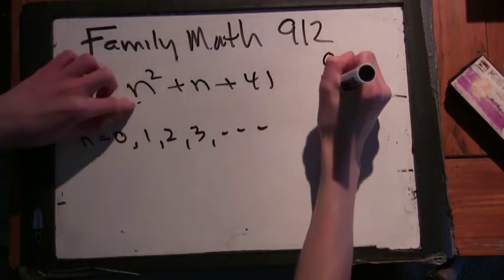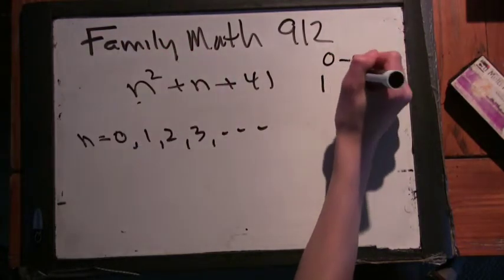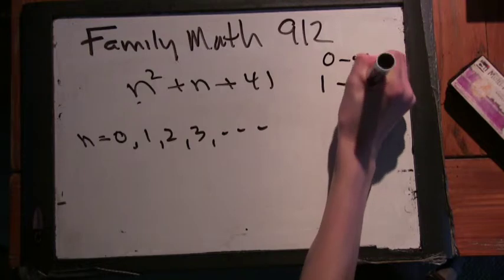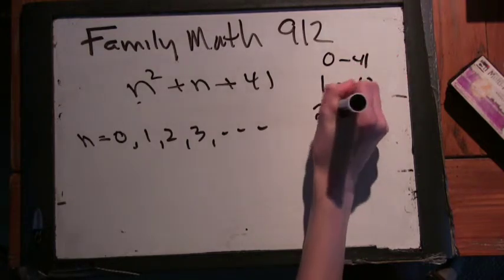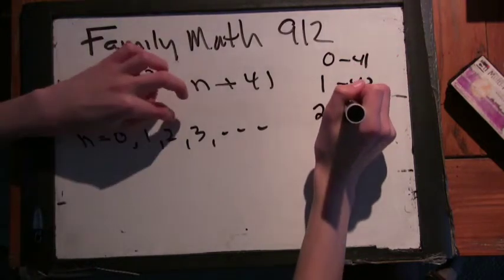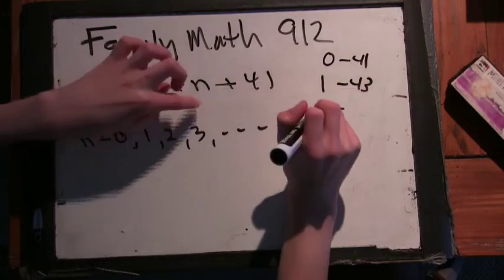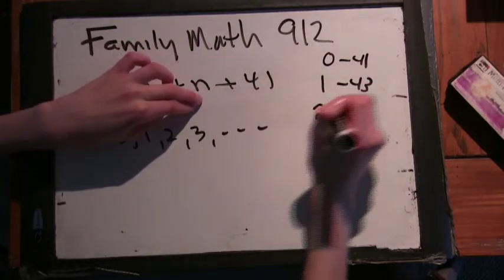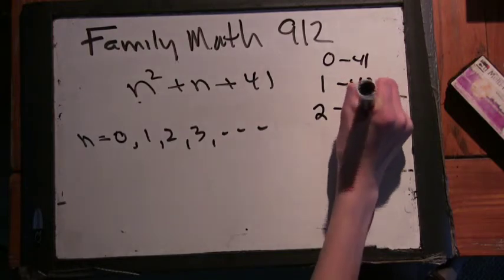1, you get 1 plus 1 is 2, plus 41 is 43. Okay. 2 is 4, 2 is 6, 41 is 47.